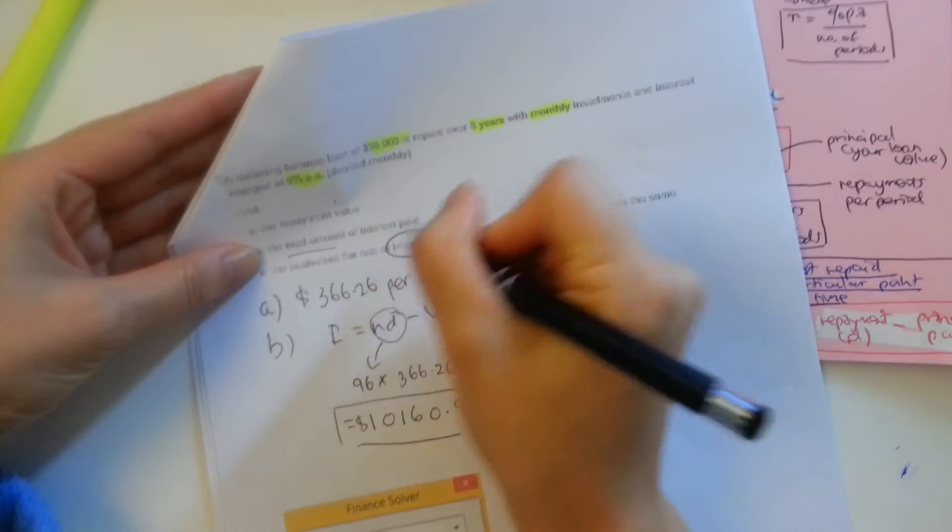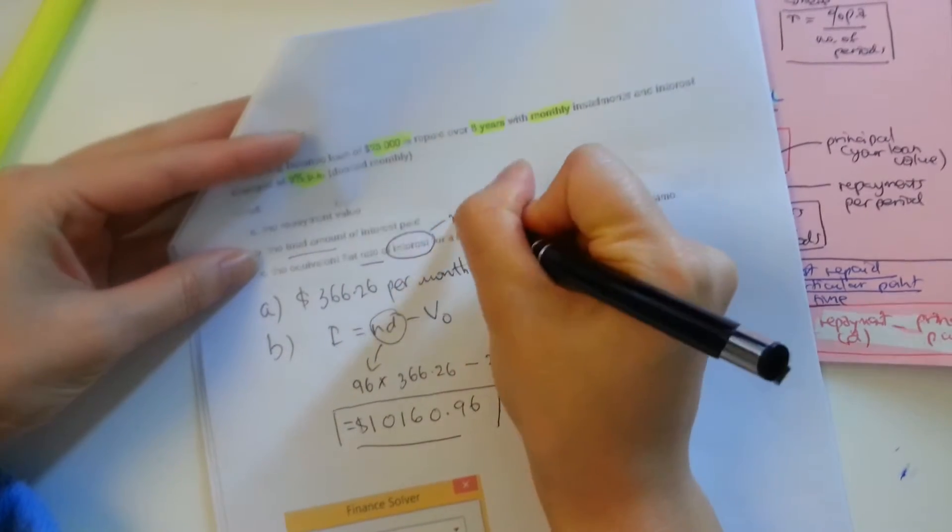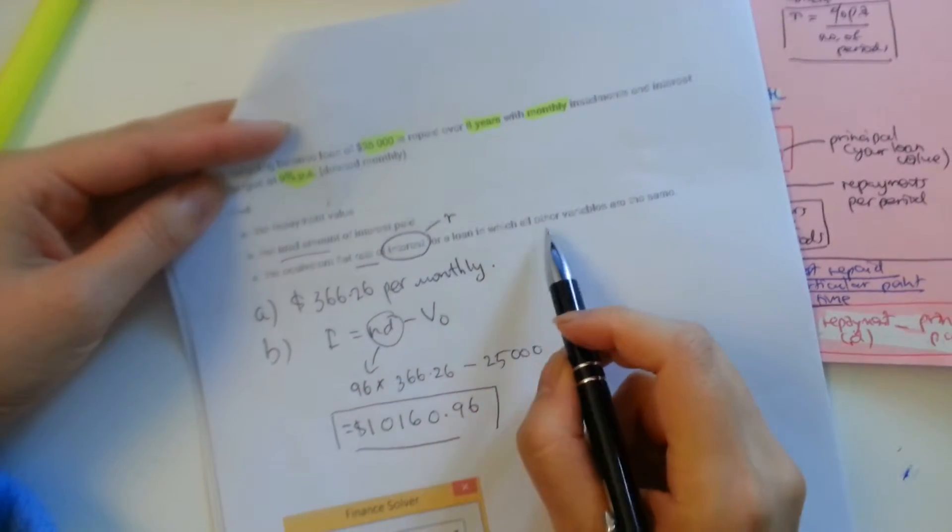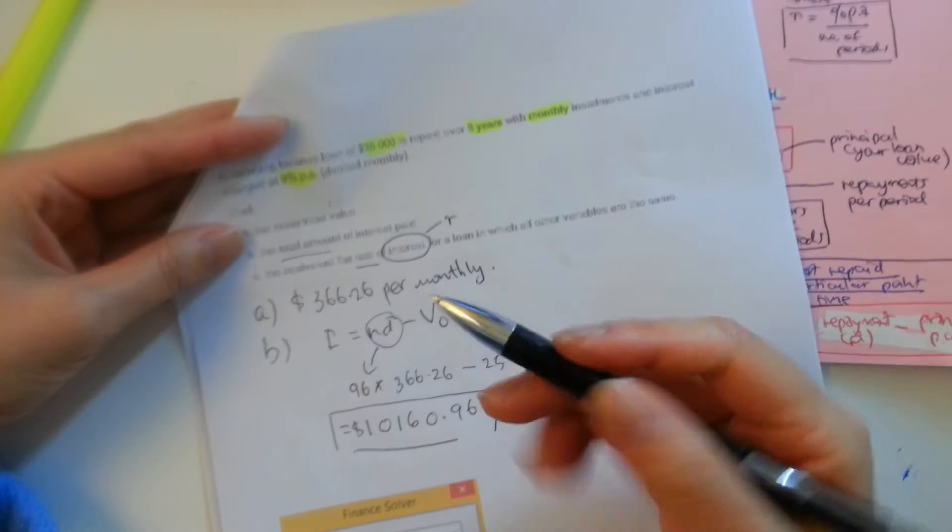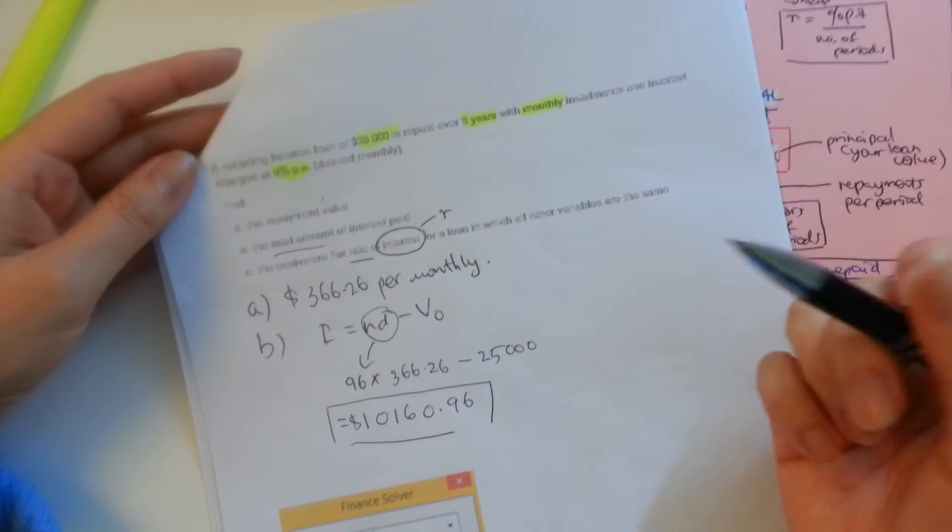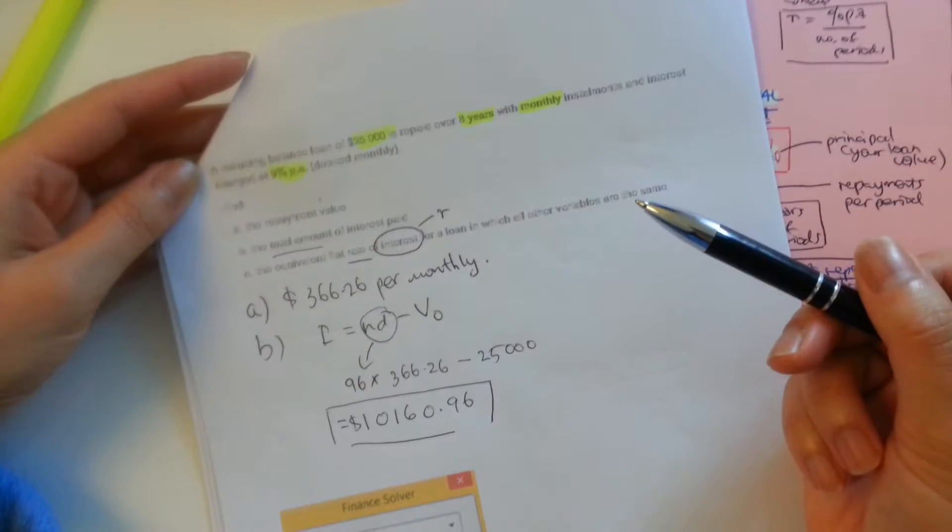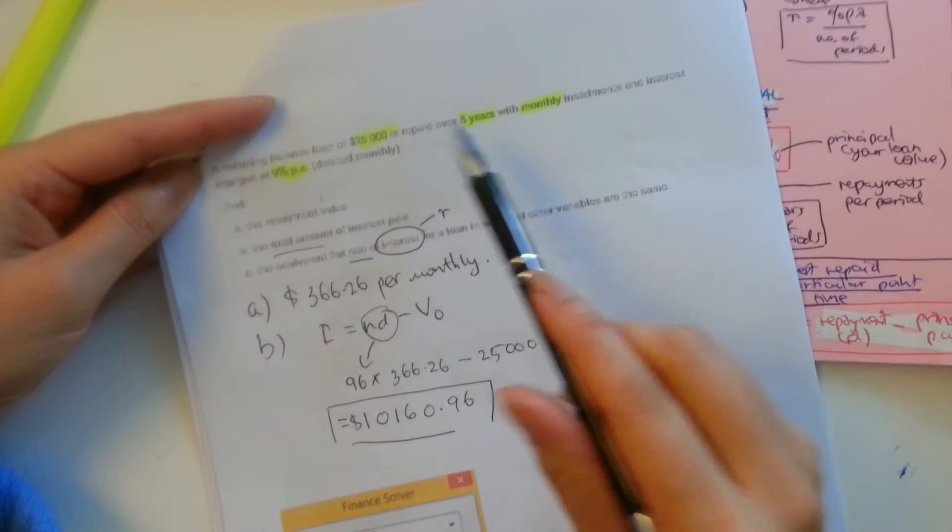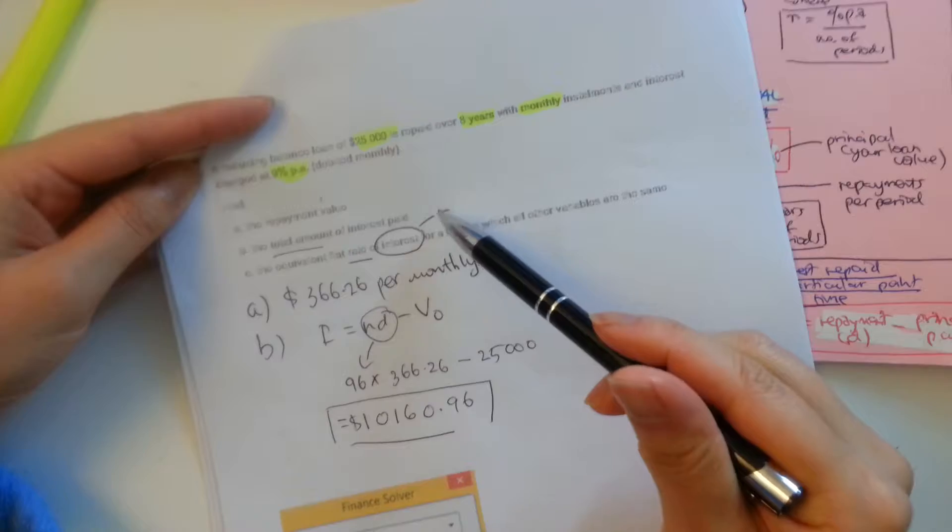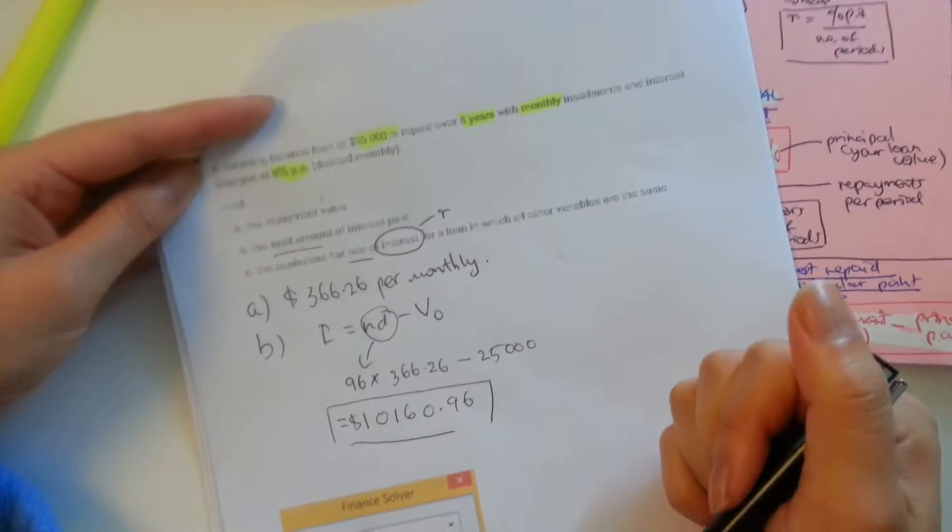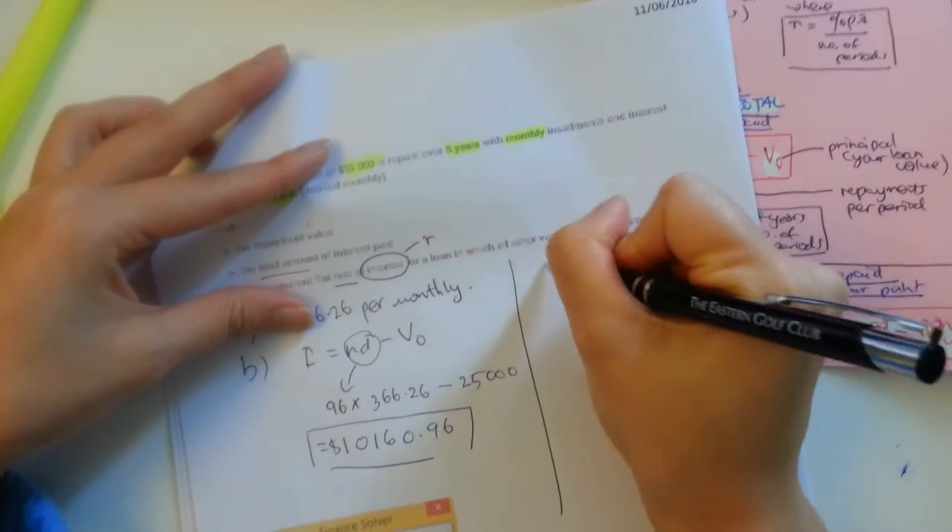So it actually wants you to find the rate of interest, which is your R, for the loan in which all other variables are the same. So what it's asking is that if this was taken up as a flat rate interest loan, with everything else remaining the same, what would be the rate charged?